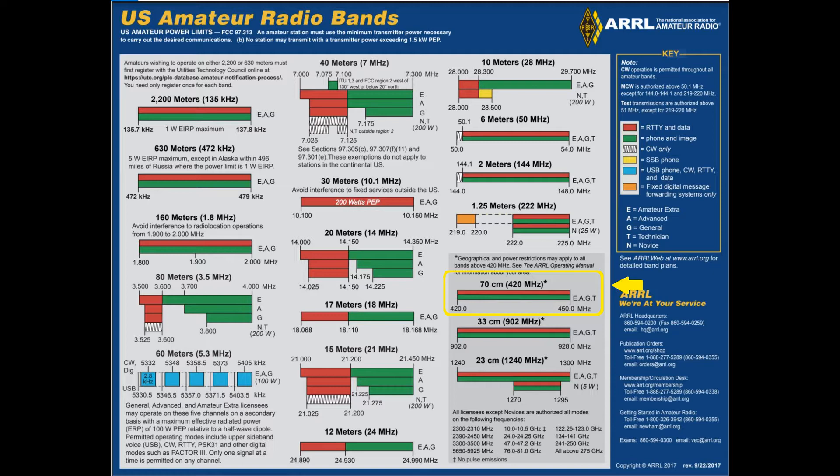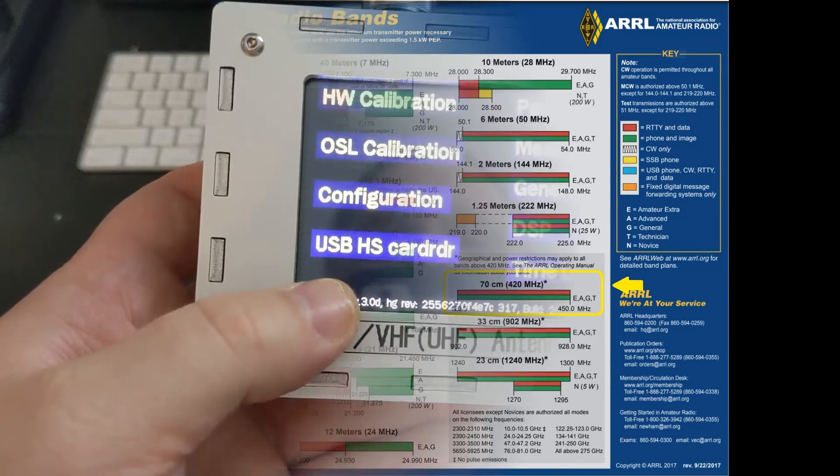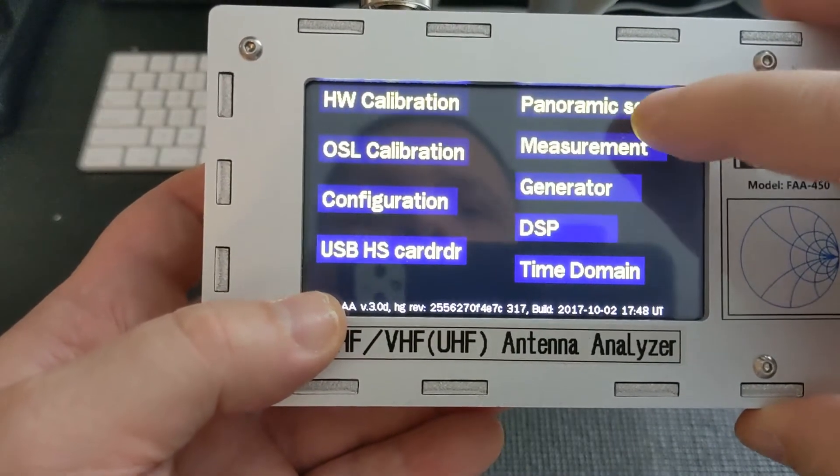As a technician and general, your access increases as you go up the licensing chain. What we're looking for is the 70-centimeter band, which I've circled in yellow on this chart, and we're going to try and optimize our antenna to work within that band. I've already hooked up the antenna to the analyzer.